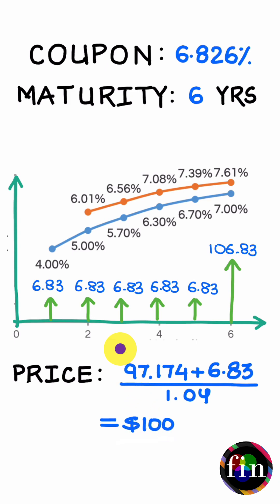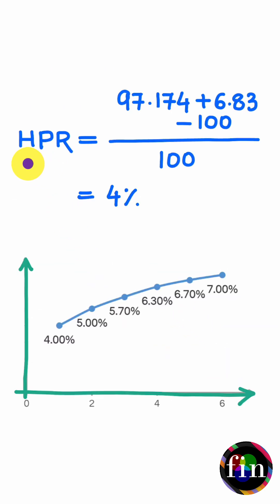This valuation assumes that the priced-in or assumed term structure of spot rates one year from today will be this term structure. Also, I can make use of these two values to calculate my holding period return for this one-year period, and it turns out to be 4%, which is nothing but the year one spot rate.